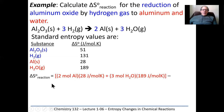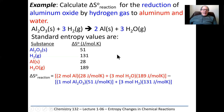To find the entropy of the chemical reaction, we take the sum of the entropies of the products minus the sum of the entropies of reactants. So: two moles of aluminum times 28 J/mol·K, plus three moles of water times 189 J/mol·K — that's the sum of the entropies of the products. We subtract: one mole of aluminum oxide times 51 J/mol·K, plus three moles of hydrogen times 131 J/mol·K — the sum of the entropies of the reactants.